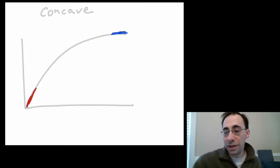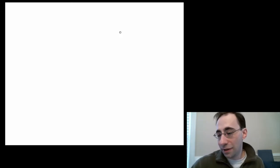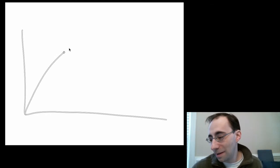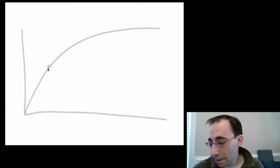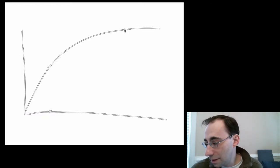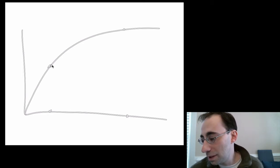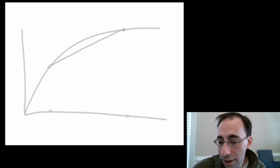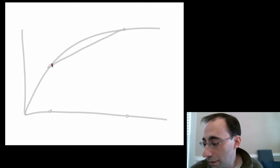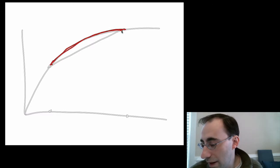A concave function is represented by any function in which, if you draw a line connecting two points on the function, that line is going to occur below the function itself. So if this is the line, then the function in red is always above the line between the two points.